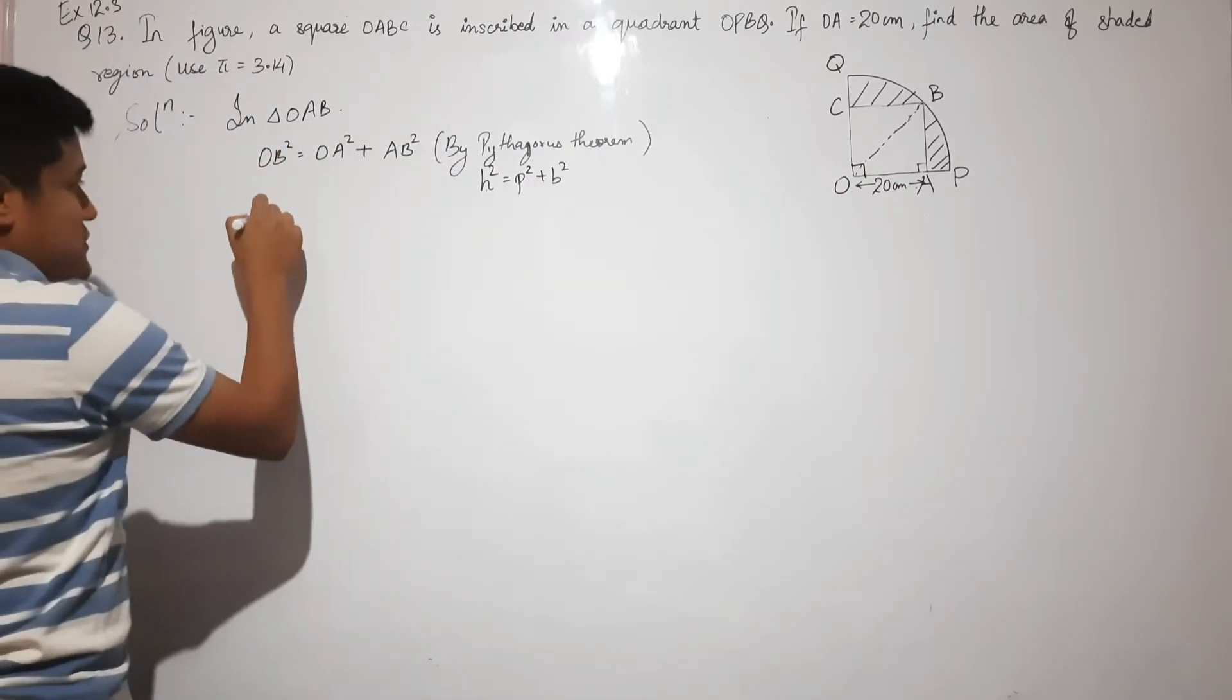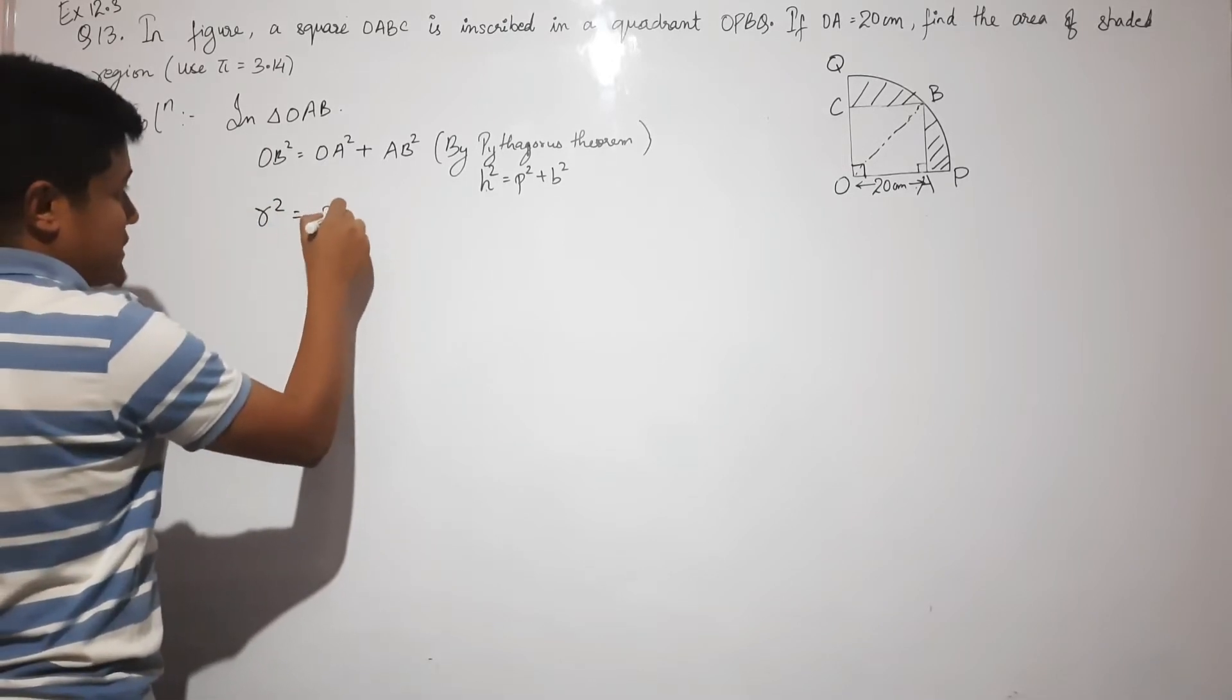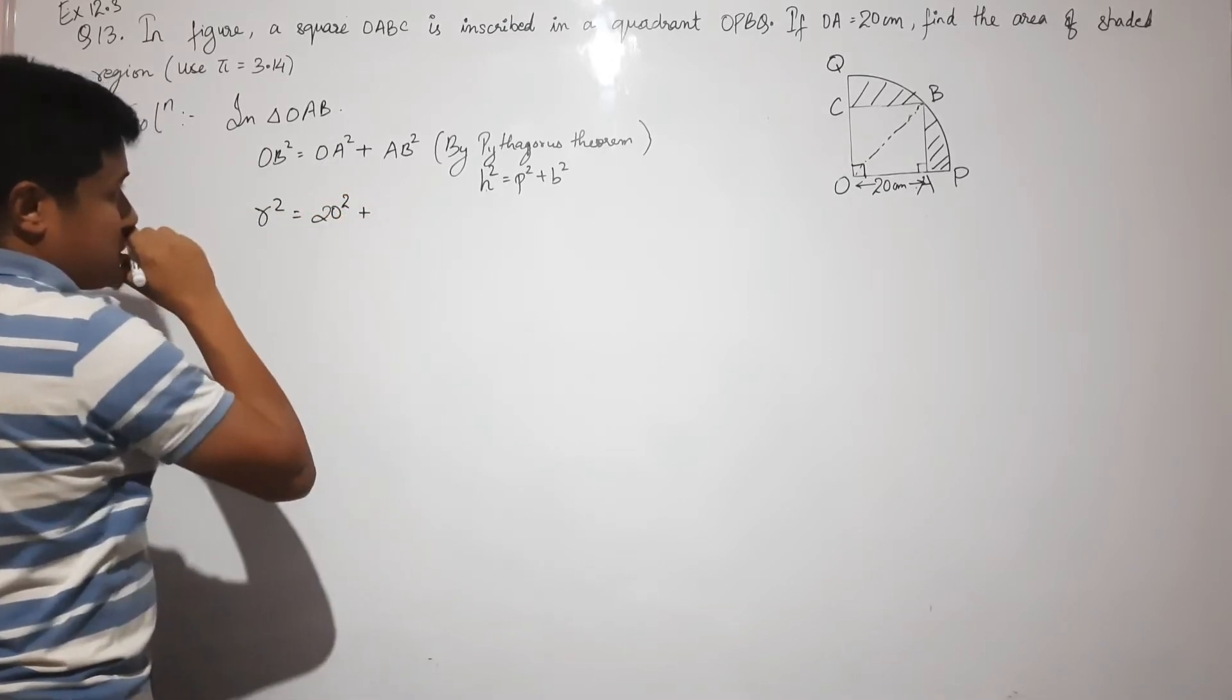So OA is 20 squared, which is 400. Next, AB is also a side of the square.